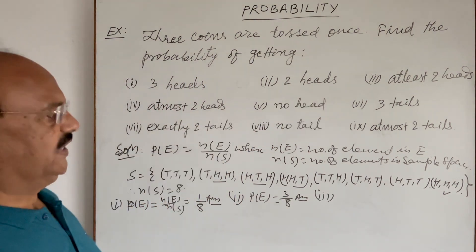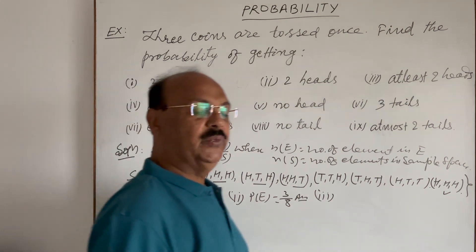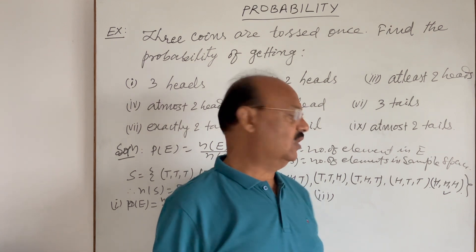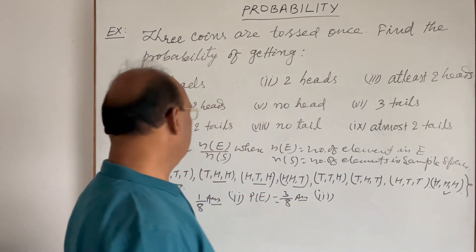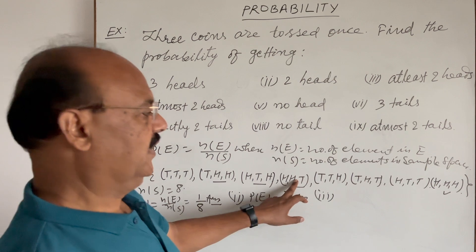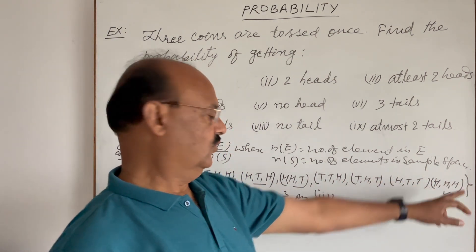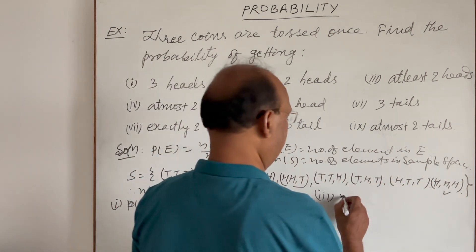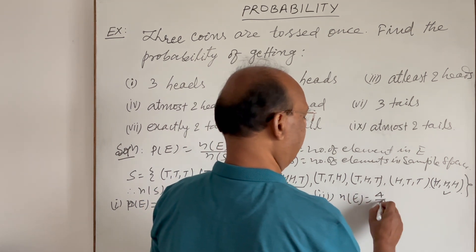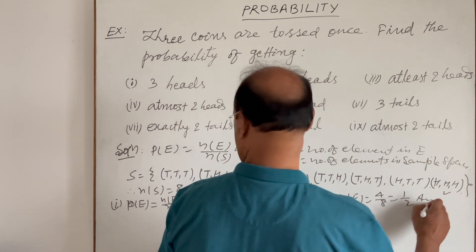Third part: at least two heads. At least two heads means a minimum of two heads, so it can be more than two as well. Elements with exactly two heads: three elements; elements with three heads: one element. So n(E) is 4, and the probability is 4/8, which equals 1/2. This is the answer for the third part.